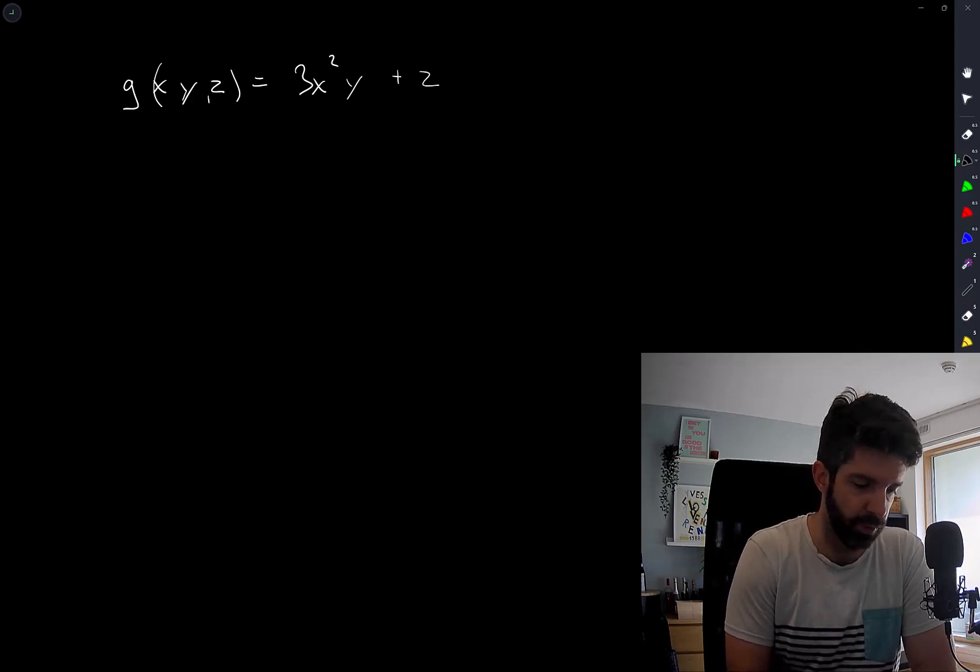So the directional derivative in a particular direction is given by the gradient of g, and we take a dot product with the vector v.